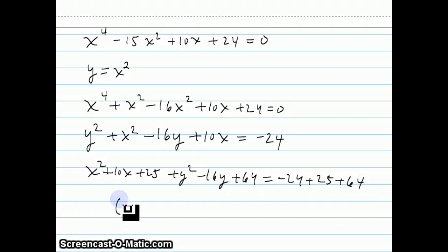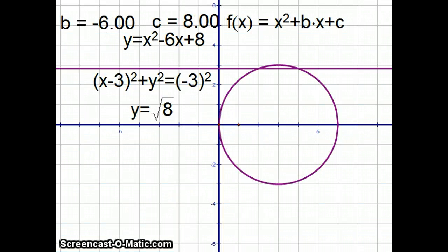And we end up with the equation for the circle, which is x plus 5 squared plus y minus 8 squared equals 65. And if we graph this circle with this parabola, we're going to get things that intersect at the solution. As you'll see on this next page,